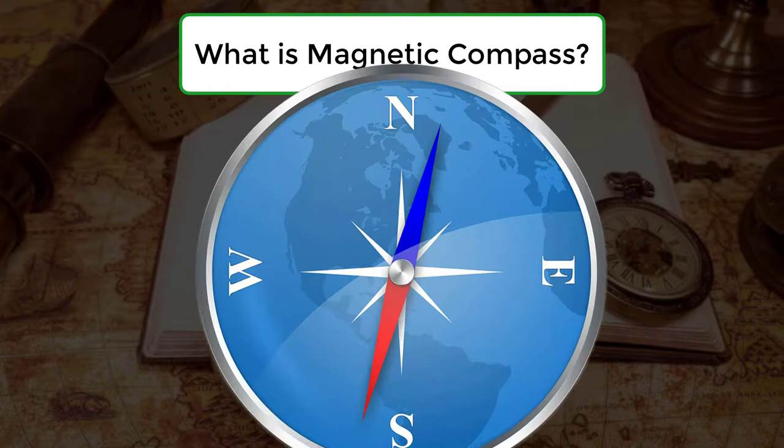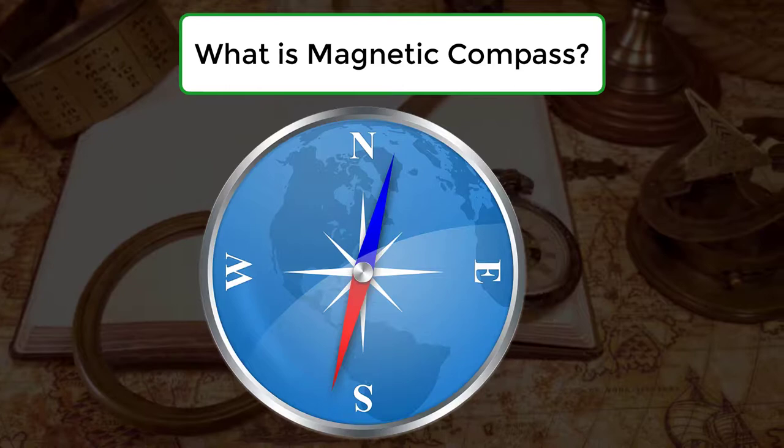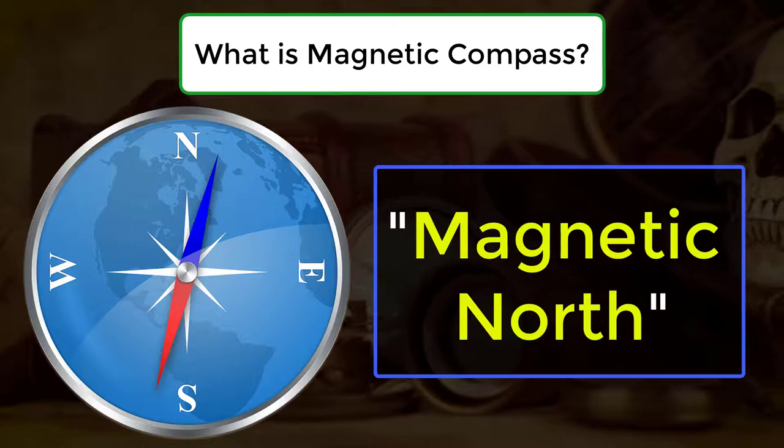What is magnetic compass? The magnetic compass is the most familiar compass type. It functions as a pointer to magnetic north, the local magnetic meridian, because the magnetized needle at its heart aligns itself with the horizontal component of the earth's magnetic field.